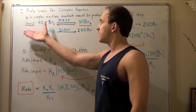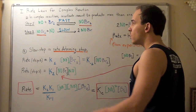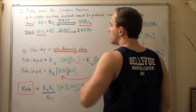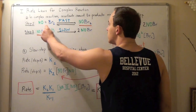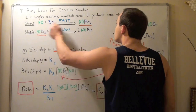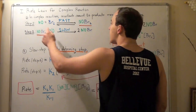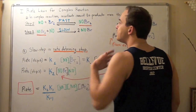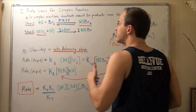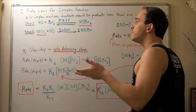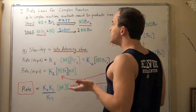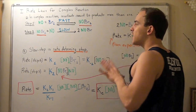Let's examine the situation at hand. Notice our first step is now the fast step, meaning one mole of NO will react with one mole of Br2 to produce one mole of NOBr2. This step will be really quick — it will reach equilibrium and go back. We're going to assume that this first reaction is at equilibrium before the second reaction even begins, and that the concentration of the intermediate NOBr2 is very, very small.